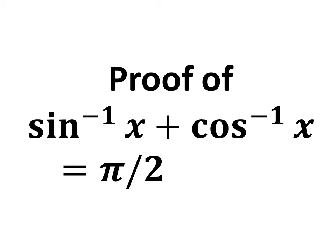In this video, we will learn how to prove the trigonometric identity: inverse sine of x plus inverse cosine of x is equal to π/2.